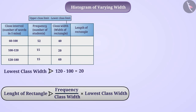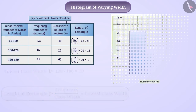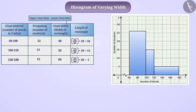For example, the length of the rectangle for class interval 60 to 100 can be obtained using this formula. Similarly, the lengths of the rectangles for the other class intervals can be obtained in the same way. We then draw rectangles with a suitable scale for each class interval. Here, 1 unit equals 20 words on the x-axis and 1 unit equals 5 students on the y-axis, from which we obtain the corrected histogram.